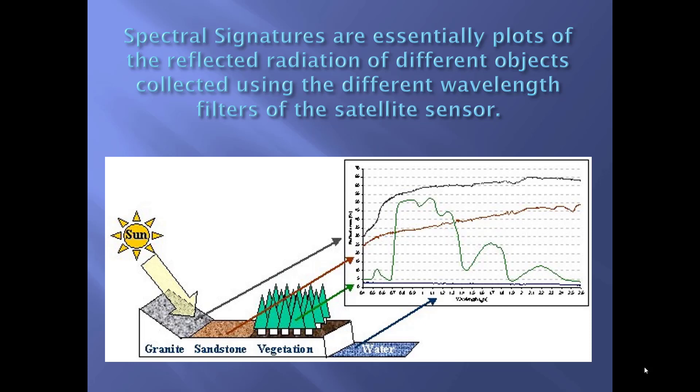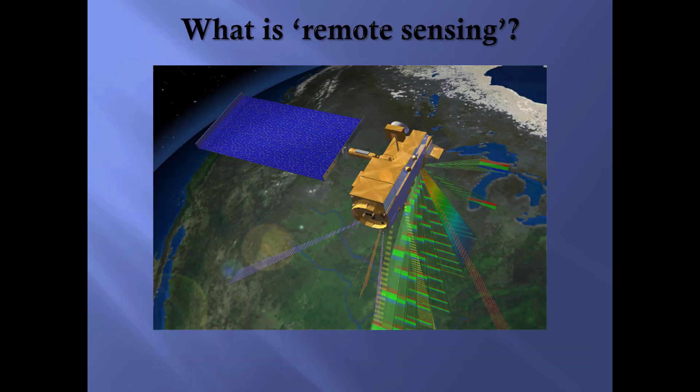This is a diagram representing incident energy from the sun — so this would be passive remote sensing. It's showing you a reflection off of granite, sandstone, vegetation, and water. There are different curves shown in the graph. The x-axis represents wavelength and the y-axis is percent reflectance.